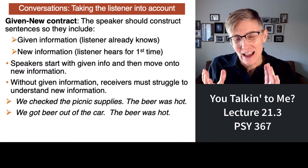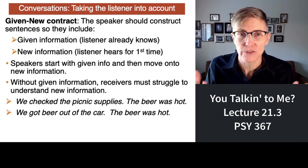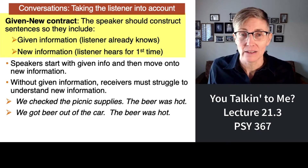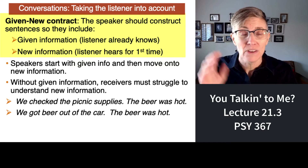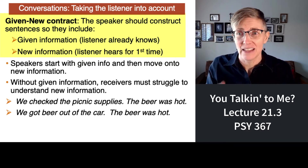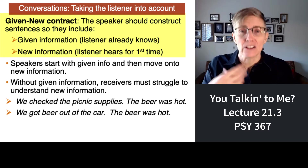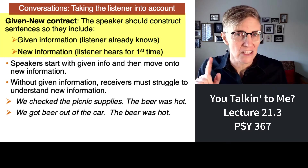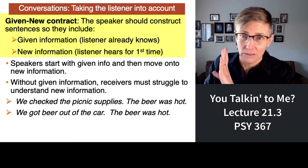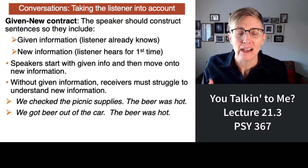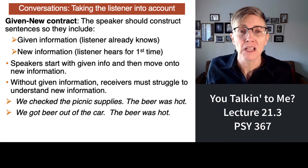One of the things that we use to have conversations with other people is like an agreed-upon rule that no one tells you — you just figure it out — called a given-new contract. If I start talking about something different that I haven't spoken about before, then I need to signal you that I've changed topics. That's the given-new. So maybe we're gossiping about our friend George and we can talk and talk about that. But if I'm going to tell you new gossip about somebody else, I need to tell you I'm not talking about George anymore — now I'm talking about Matt. If I don't let you know what I'm talking about, sentences get really confusing. For example: we checked the picnic supplies. The beer was hot.